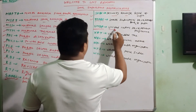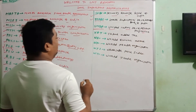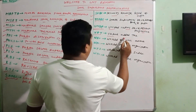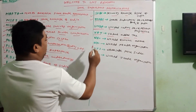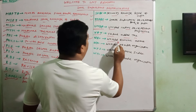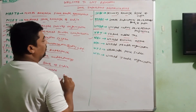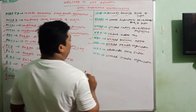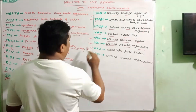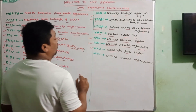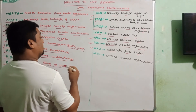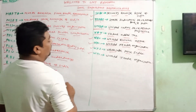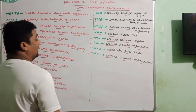UNDP means United Nations Development Programme. VAT means Value Added Tax. WEO means World Economic Outlook. WHO means World Health Organization. WPI means Wholesale Price Index — CPI is Consumer Price Index and WPI is Wholesale Price Index. WTO means World Trade Organization.